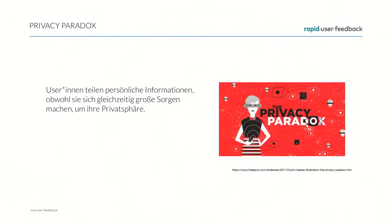The starting point is the privacy paradox: despite people caring about their private data and being afraid of losing it, they don't do much to actually secure it. They don't think about what happens when they post personal content on social media, do online shopping, or use their smartphone and what data is being sent.